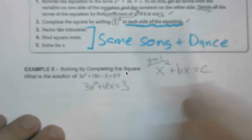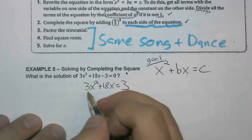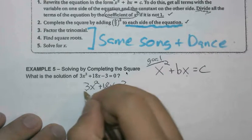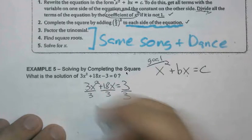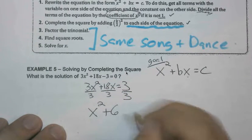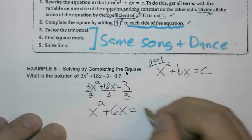Well, divide all the terms of the equation. Our a coefficient here was 3, but if we divide all the terms by positive 3, this now takes us to x squared plus 6x, and this equals 1.